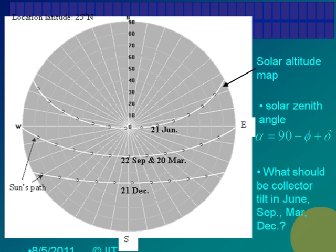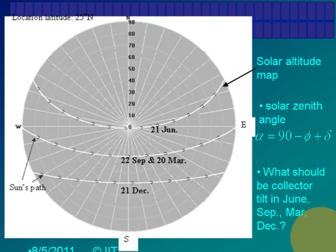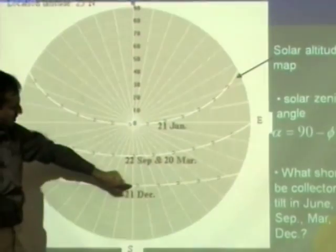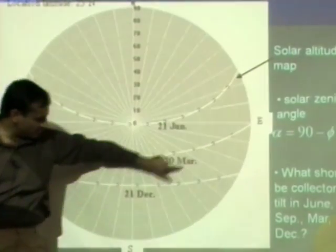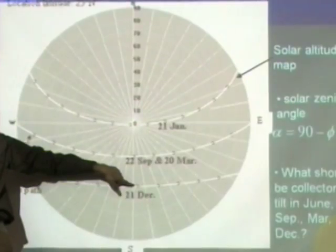If you are at a location at 25 degrees north latitude and you are looking at this, in December you will see the sun moving in front of you, going up and setting in front of you. So it will rise at almost 70 degrees, and come to this circle which is 50 degrees. Even at the noon time, the sun will be 50 degrees from the vertical. In winter, even at noon time, the sun does not come to overhead position.